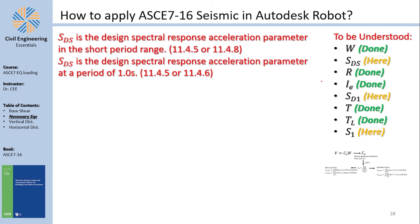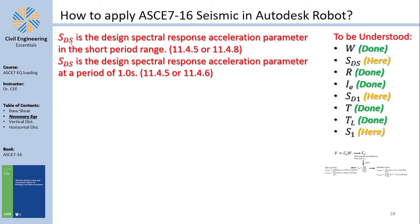SDS is the Design Spectral Response Acceleration Parameter in the short period range. SD1 is the Design Spectral Response Acceleration Parameter at a period of 1.0 second — both represent a percentage of g. These are design values: SDS = (2/3) × SMS and SD1 = (2/3) × SM1, per equations 11.4-3 and 11.4-4.